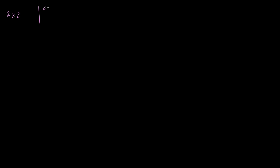Let's see if taking the transpose of a matrix does anything to its determinant. A good place to start is with the 2×2 scenario. If I start with some matrix a, b, c, d, and take its determinant, that's going to be equal to ad minus bc. Now let me take the transpose of this and then take its determinant.